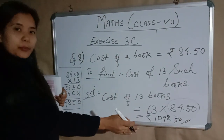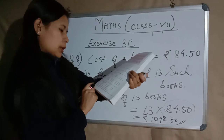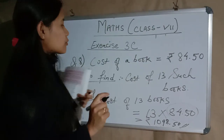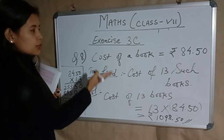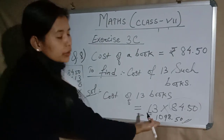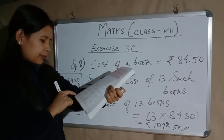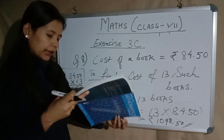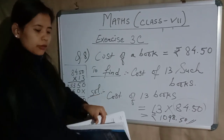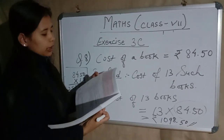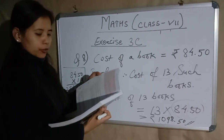So ₹1098.50 is the cost of 13 books. The same way, you can attempt questions 9 and 10. Always remember to work stepwise — show each and every step to get to the answer. With this we are done with multiplication of decimals. In the next video I'll come up with division of decimals. Till then, see you, bye!